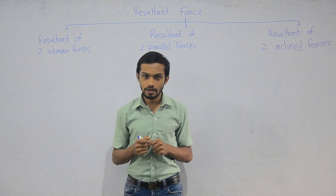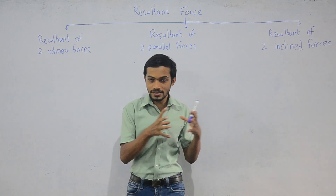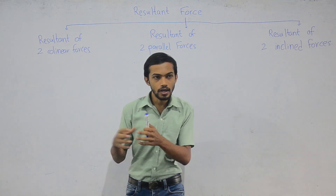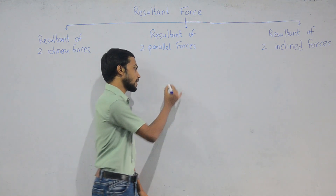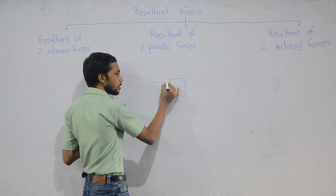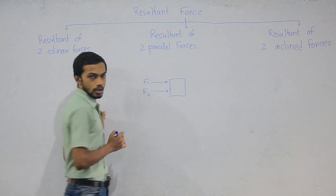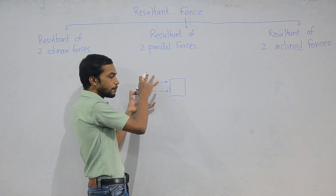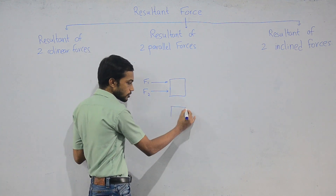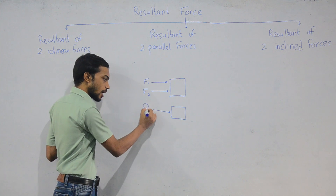Today we are going to talk about resultant force. Resultant force is the single force that can give the same result as two or more forces. For example, if you have an object with forces F1 and F2 applied to it, and a single force can give the same result as those two forces, that single force is called the resultant force.